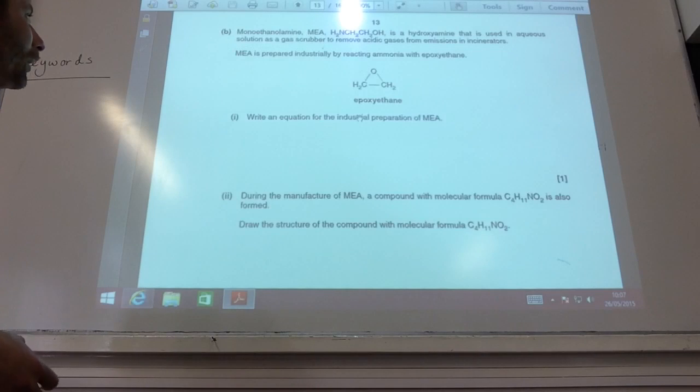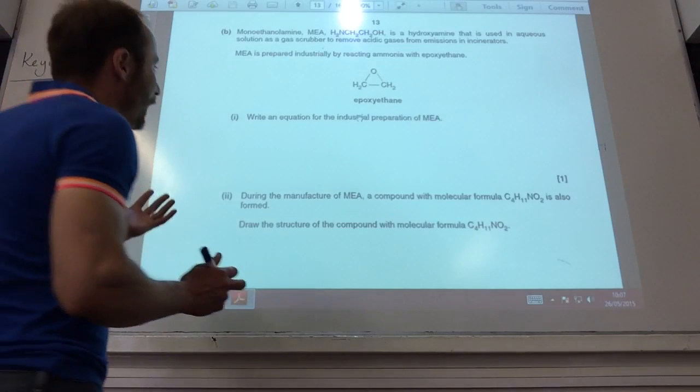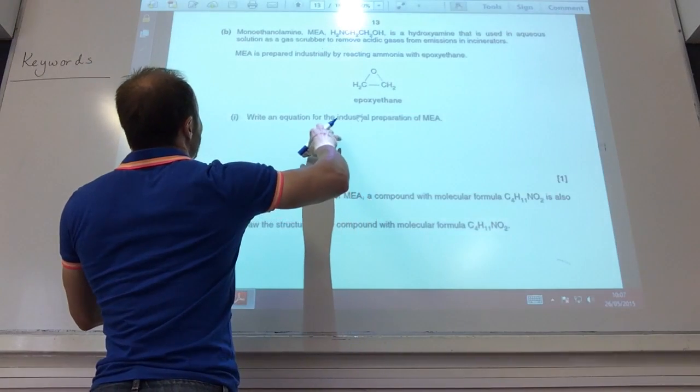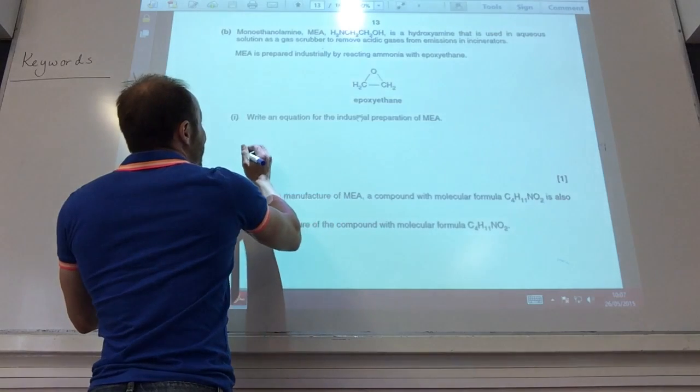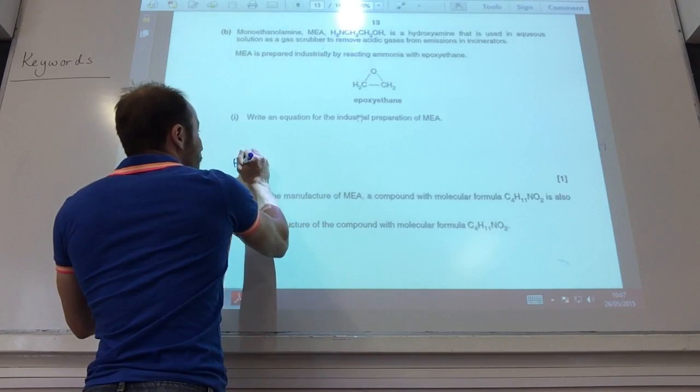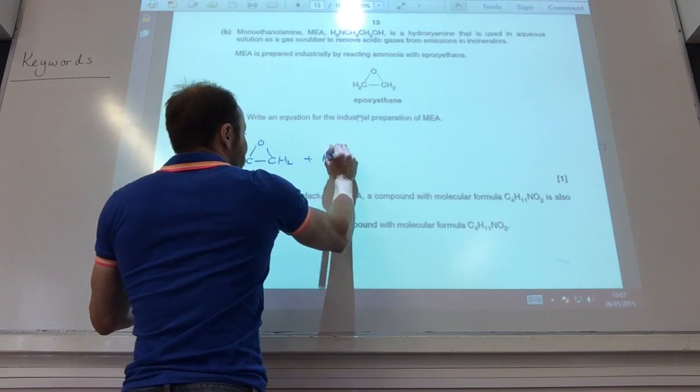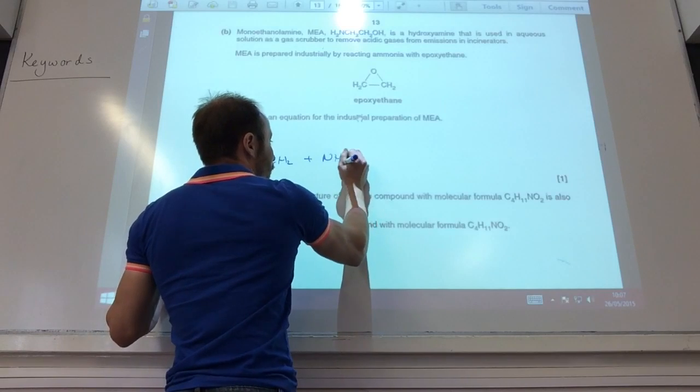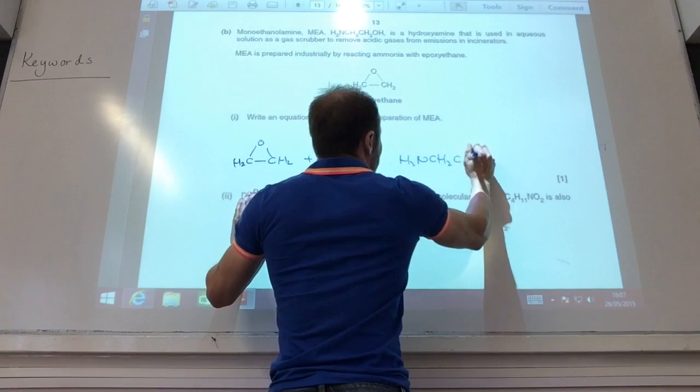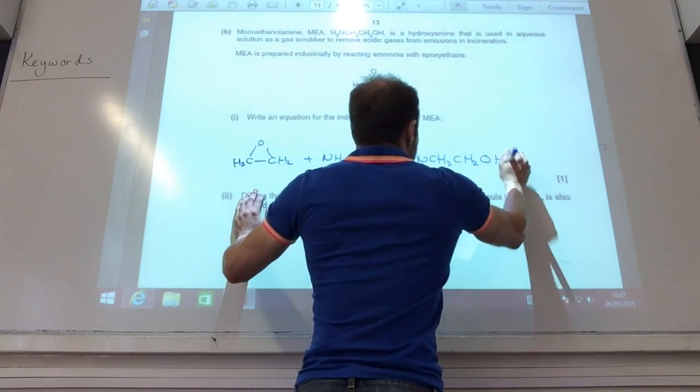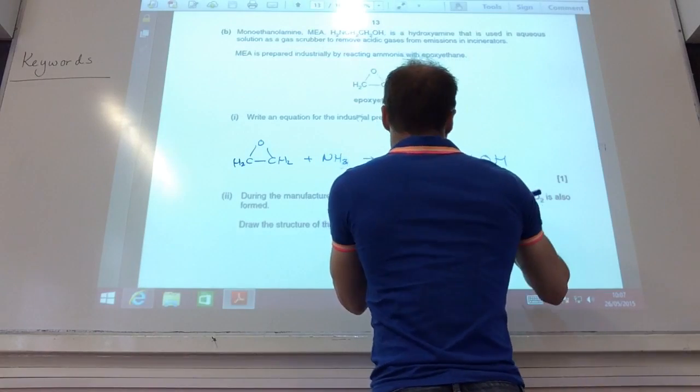Okay, so this is where they give you something you've not seen before and you've got to do something with it. The first one isn't too bad, they want you to compare monoethanolamine, and they've told you how you do it. So you take this boy, you react with ammonia to make MEA, and that's it.